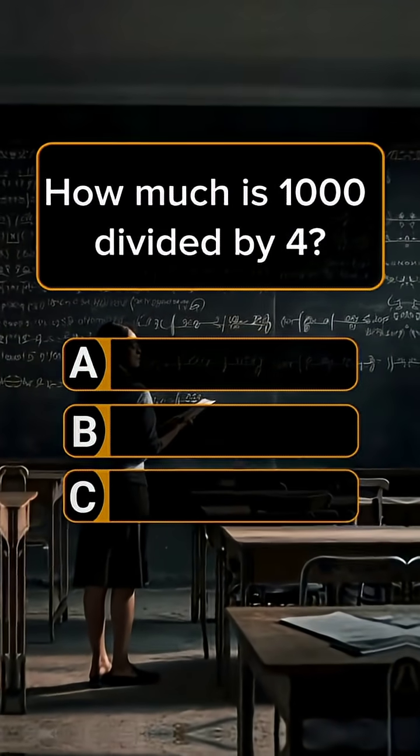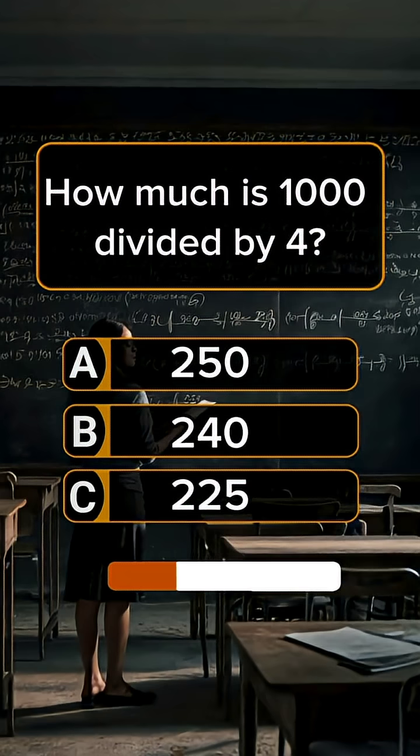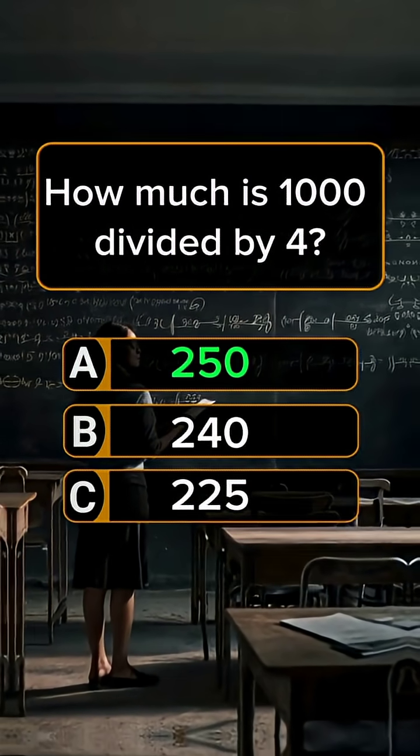Question 6. How much is 1,000 divided by 4? Answer A, 250.